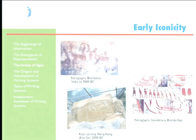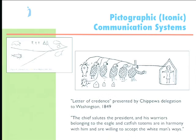Icons are also used extensively in this period, to the point where there begin to emerge representational systems that use purely icons to stand for complicated relationships. Here, for example, is a letter of credence — basically a good-faith letter — submitted by the Chippewa delegation who went to Washington in 1849 to ask that certain lakes be maintained in their reservation. This is the guy on the right — the president in his house, the White House. On the left, there's the chief marked as the eagle because he's of the eagle clan. There's another of the catfish clan; they're in accord, as shown by the lines between them.